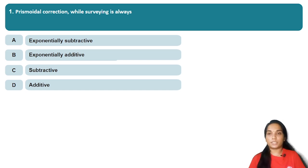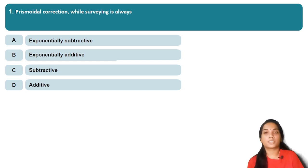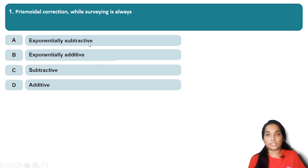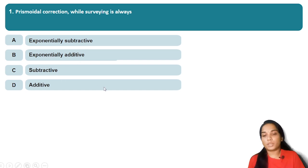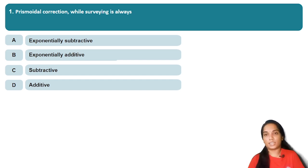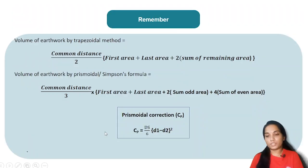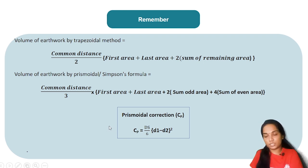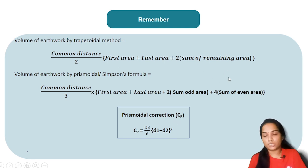The Trapezoidal method is used to convert values. The options for Prismoidal correction are: exponentially subtractive, exponentially additive, and subtractive. Every time you have a Prismoidal correction, you have to be able to explain the equations.